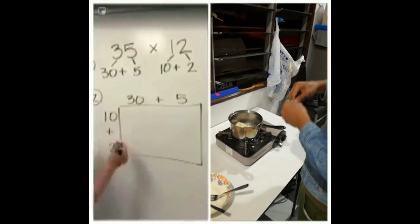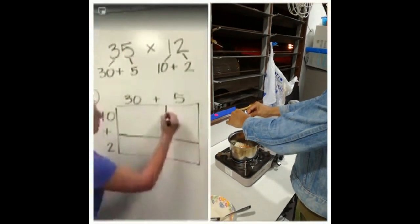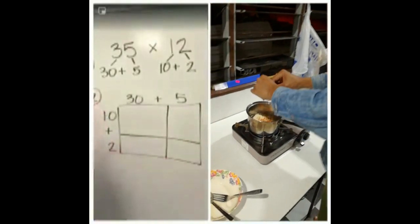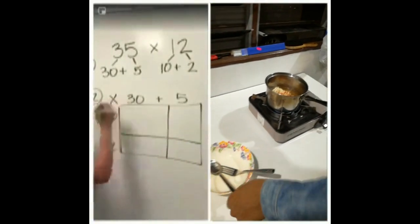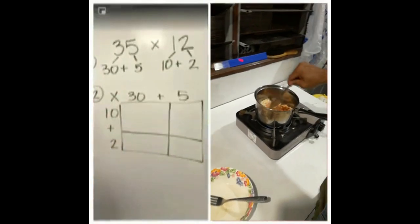Where your plus signs are, I want you to draw lines through the middle and down it. And then in the very corner, we're still multiplying, so I'm going to put a big multiplication sign.